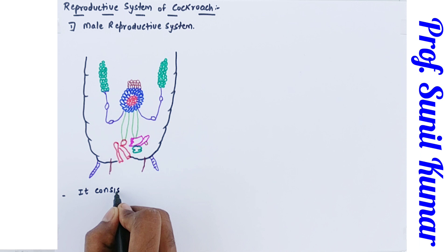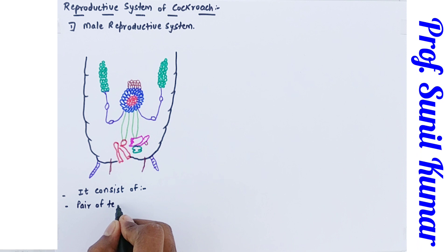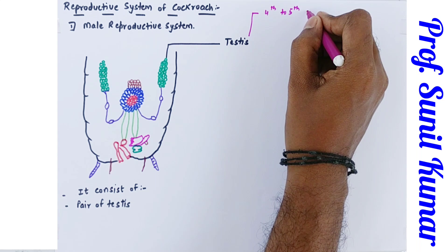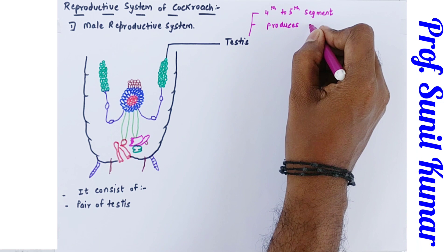Every male reproductive system consists of a pair of testes. The main function of the testis is production of sperm. In cockroach, the testis is present between the fourth and fifth abdominal segments, and its role is to produce sperm. The male reproductive system of cockroach also consists of a pair of vas deferentia, also known as the spermatic cord.